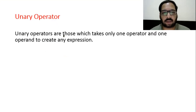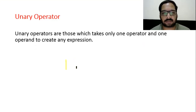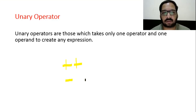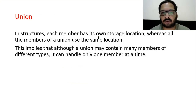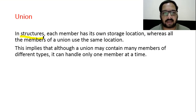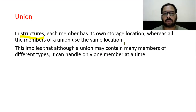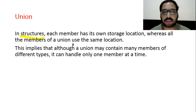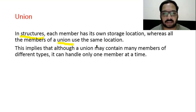Unary operators are those which take only one operator and one operand to create an expression. For example, ++ (increment) or -- (decrement) — these are examples of unary operators. Union: each member in a structure has its own storage, whereas all members of a union use the same memory location. In a union, the memory location is shared by all members, while in a structure each member gets different memory.